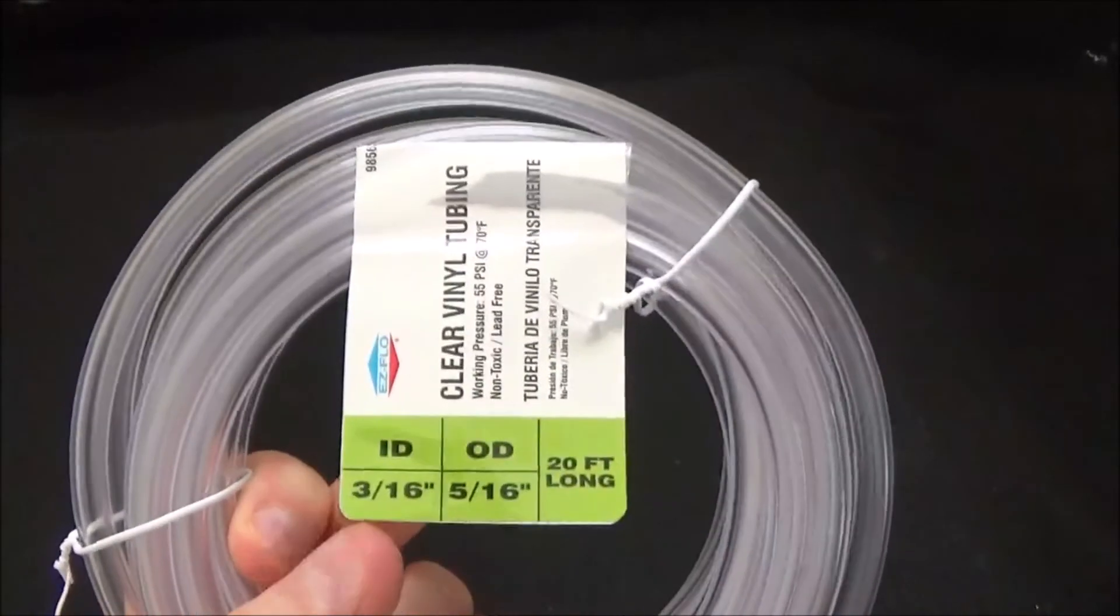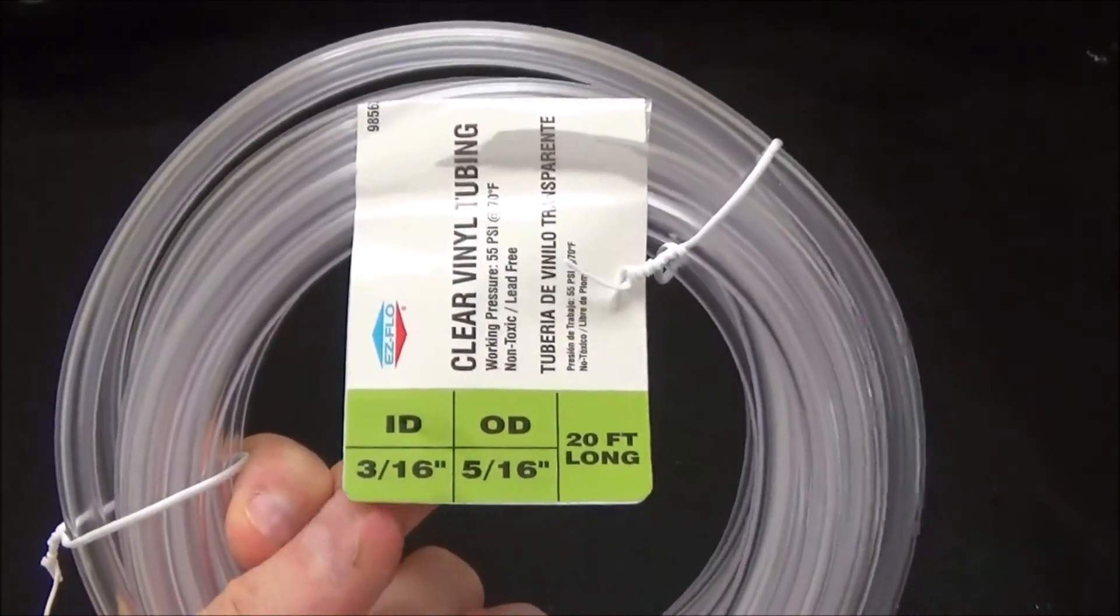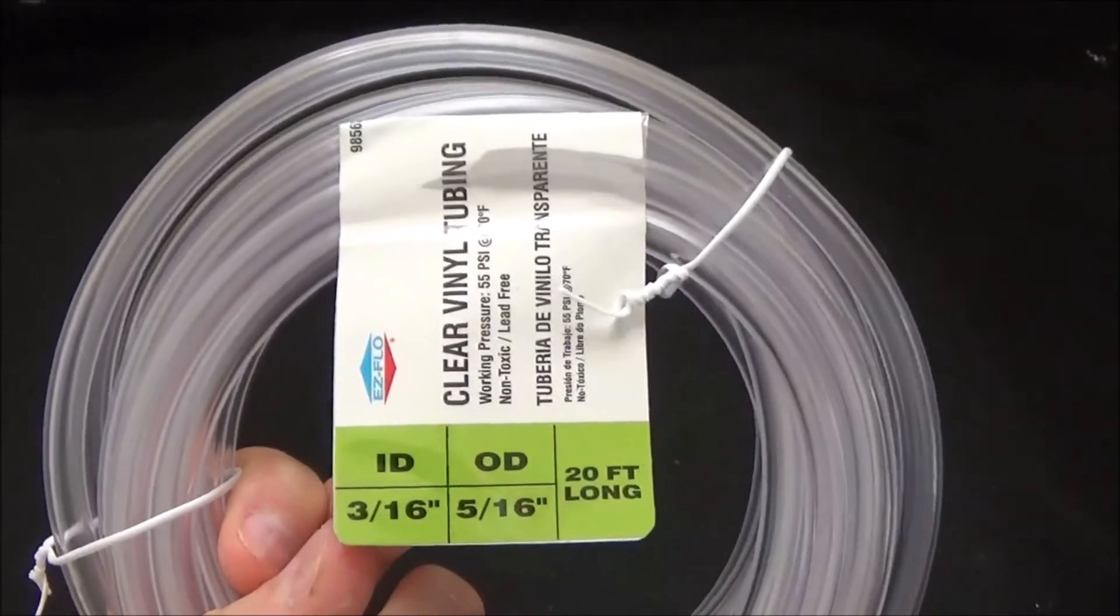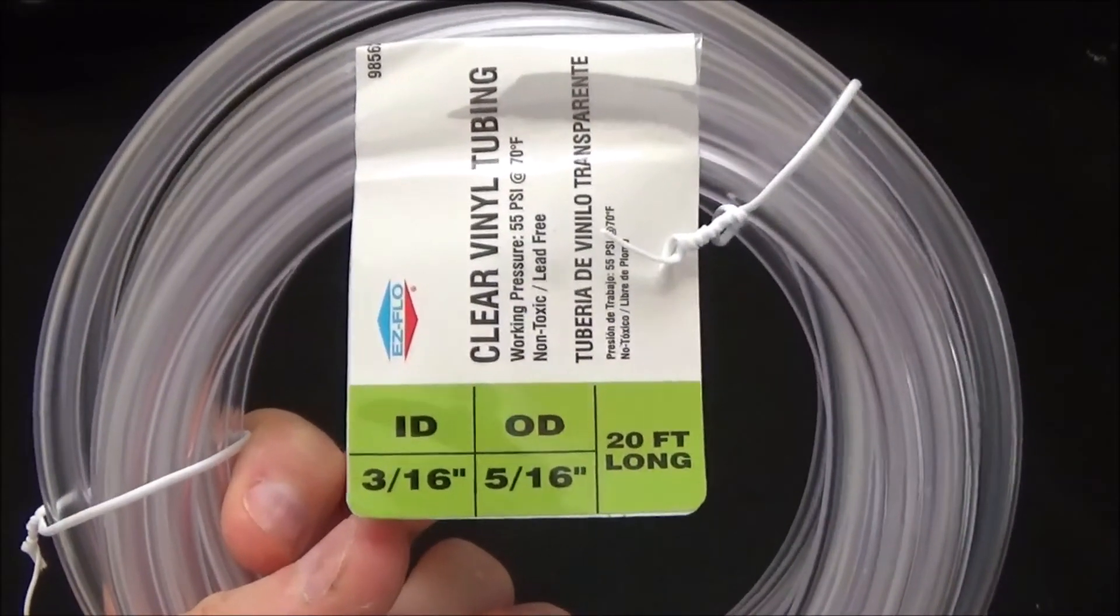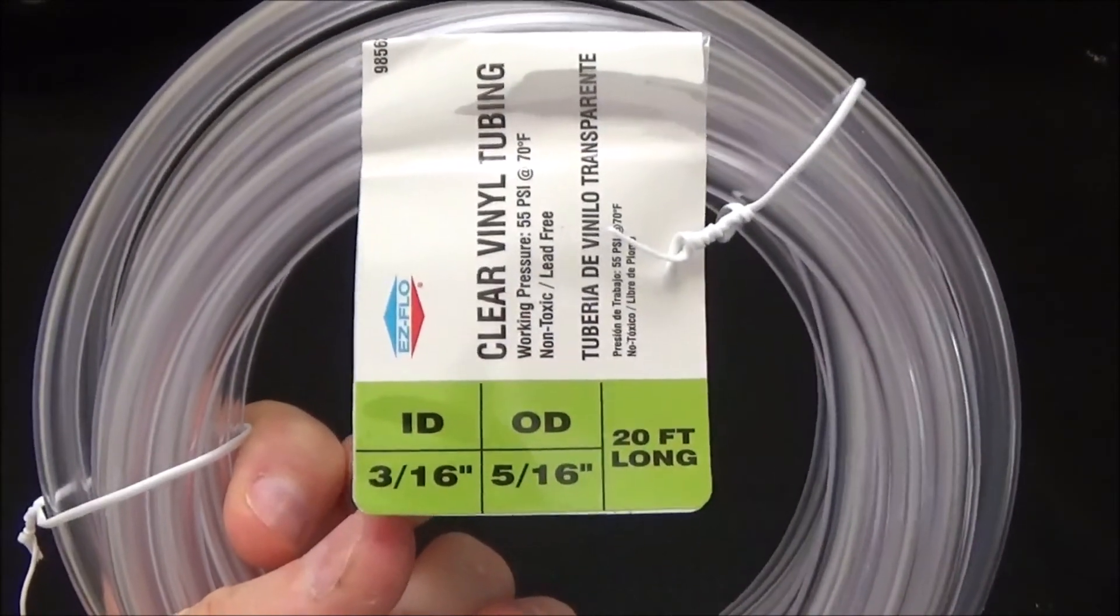I can't find that here in the US, so what I had to get is I went down to Lowe's and found this tubing with three-sixteenths internal diameter, five-sixteenths outside diameter.